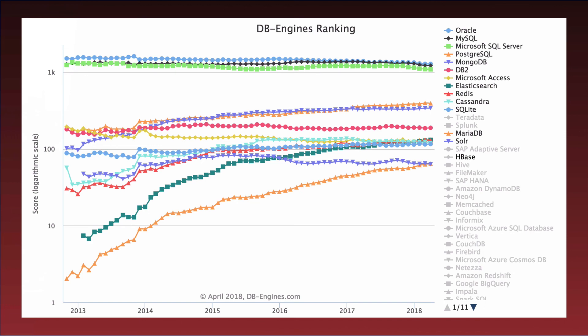This was recorded in April 2018, and the data is from dbengines.com. If you ever want to go there after this, you can get a lot of metrics on the industry and see where things are at by visiting dbengines.com.